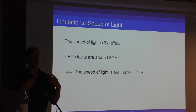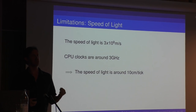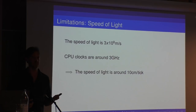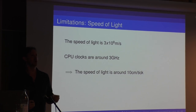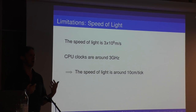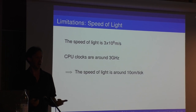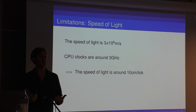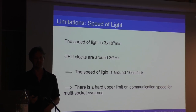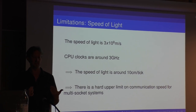Just to think about how slow: the speed of light is 3×10⁸ meters per second, and CPU clocks are of the order of a few gigahertz. At 3 GHz, the speed of light is around 10 centimeters per clock tick — that doesn't get you very far. That puts a hard upper limit on how far you can transfer data in a clock. This is particularly apparent for multi-socket systems, because it implies a hard limit on communication speed.